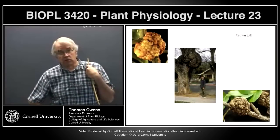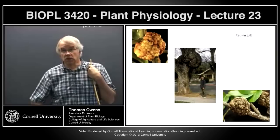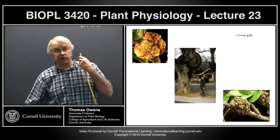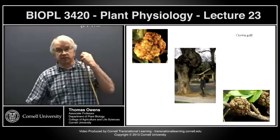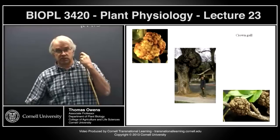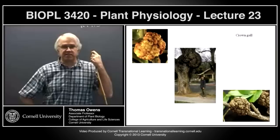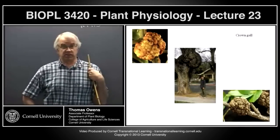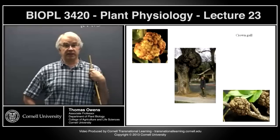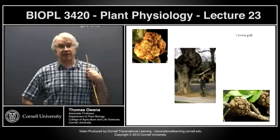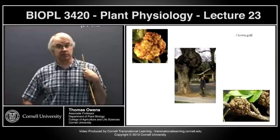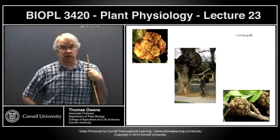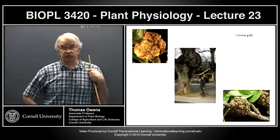A student asks whether crown gall will ultimately kill the plant. Agrobacterium, the pathogen causing crown gall, is biotrophic — it's not killing the organism. The agrobacterium has manipulated the plant to produce the compounds it needs to grow, but it's not killing the plant. Crown galls can grow for 50 or 100 years on old trees.